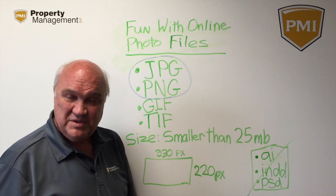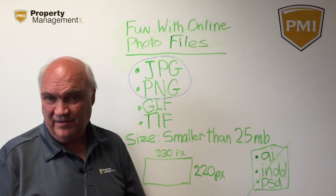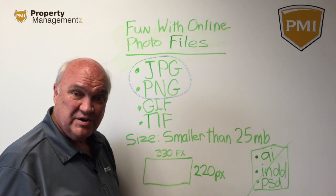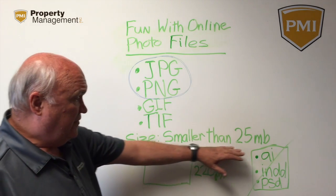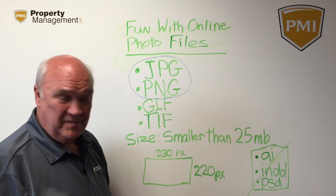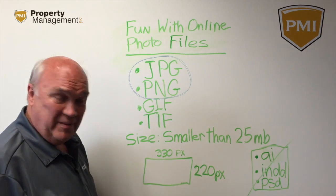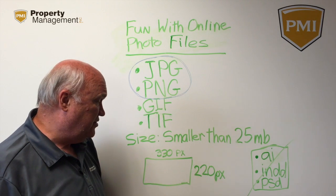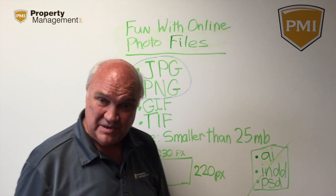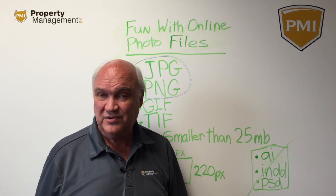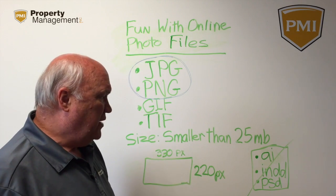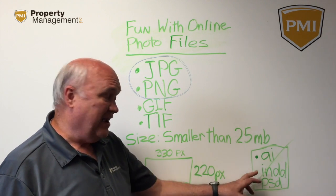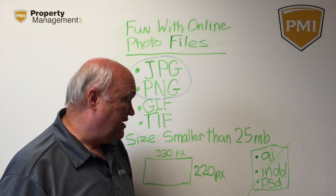Websites like Zillow, Trulia, Craigslist, or even your social media will require certain formats and different sized photos. 330 pixels by 220 pixels is a typical size for photos. You may also run across files with extensions of AI, INDD, or PSD — those are professional file formats.